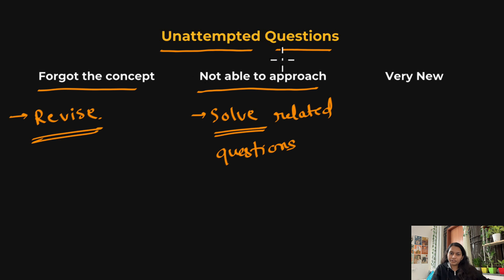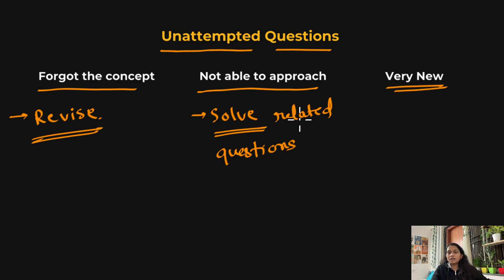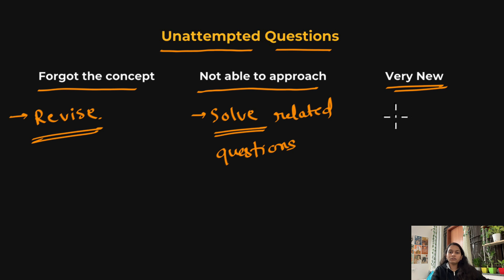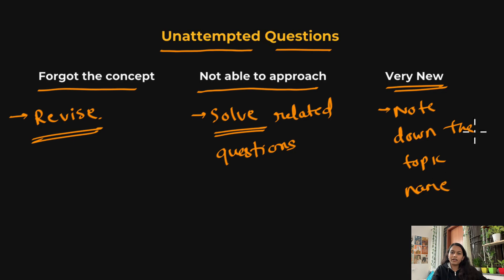Go through the solutions of unattempted questions and practice similar questions. After doing that, you will be able to approach the type of question you couldn't solve in the mock test. A third category is questions that seemed completely new to you — you may have thought, 'I haven't seen this concept anywhere.' In that case, note down the topic name, watch lectures or read articles on it, and learn that new topic.